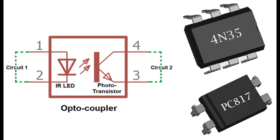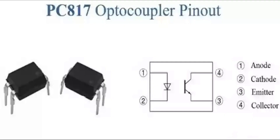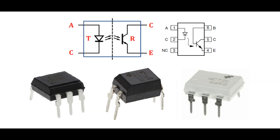The primary component of the output section is a photosensitive device sensitive to light. In optocouplers with a phototransistor output, when light from the LED strikes the phototransistor, it causes the transistor to conduct current between its collector and emitter terminals — proportional to the intensity of the received light. Some optocouplers use a photodiode instead; when exposed to light, a photodiode generates a voltage across its terminals, the magnitude of which is determined by the intensity of the incident light.